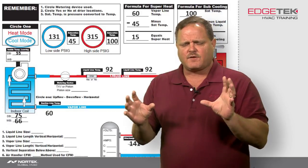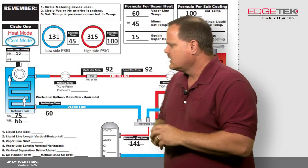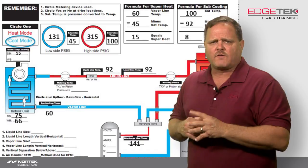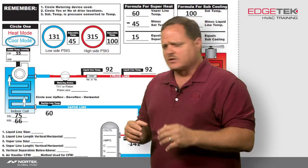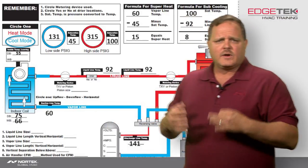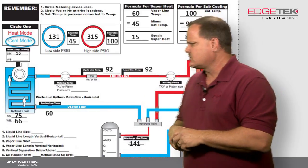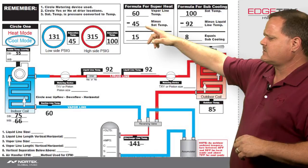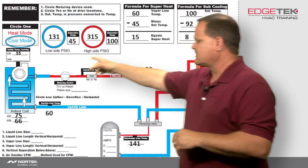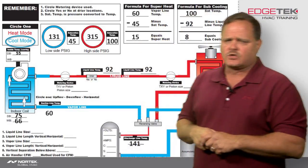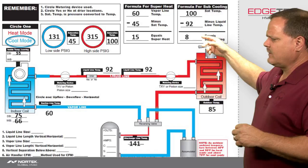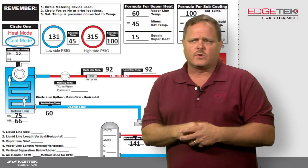Those are our two basic factors that make superheat and subcooling so important. The required superheat has to be determined from a slide calculator, which I've already done prior to this video. With that 66 degree wet bulb and the 85 degree outdoor temperature, we need a required superheat of 15 degrees. For this system, I've got a 60 degree suction line temperature, minus that 45 degree evaporator temperature, which gives me 15 degrees of superheat — perfect. On the other side, subcooling is 100 degree condensing temperature minus 92, giving me 8 degrees of subcooling.